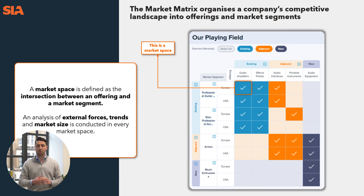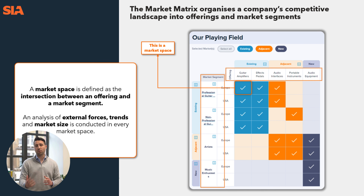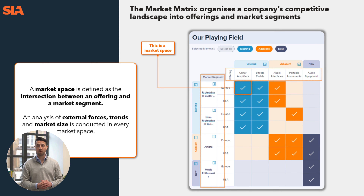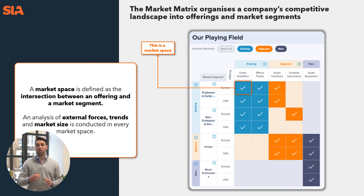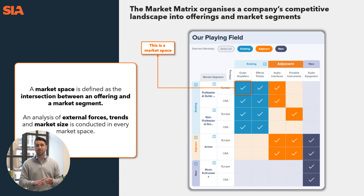The market matrix has two axes: offerings and market segments. Offerings are the products and services that we as an organization put on the market. Market segments are the customers we serve, in terms of channels as well as geographies. The market matrix itself explores existing, adjacent, and new.